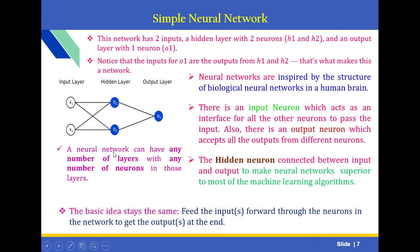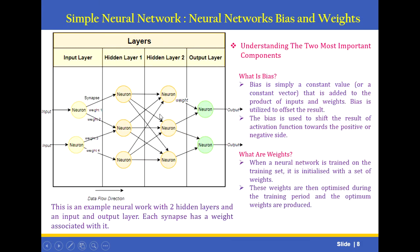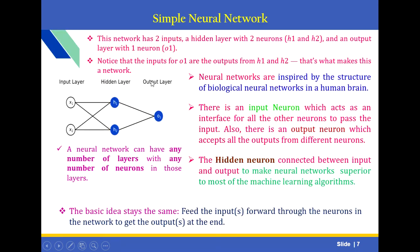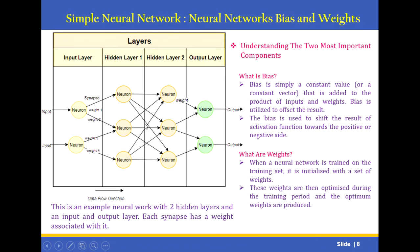The hidden neuron connected between input and output makes the neural network superior to most machine learning algorithms. Inputs are fed forward through the neurons in the network to get the outputs at the end. This is a multi-layer neuron — the previous one was a single network with only one hidden layer. If it has two hidden layers, it is called a multi-layer neuron. This is also an example of a deep learning network, which has more hidden layers.